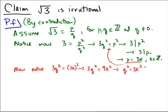But now notice that 3 is on the right-hand side of the equation, q squared is on the left. So that would imply that 3 must divide q squared as before. That would mean that 3 divides q.